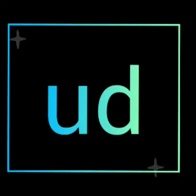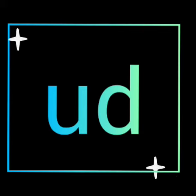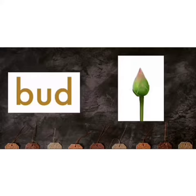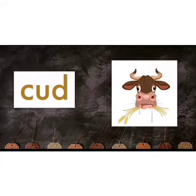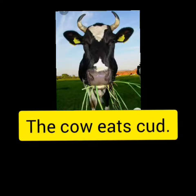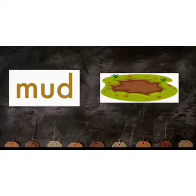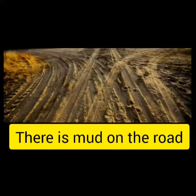Now let's learn some new words from the 'ud' family. Our first word is bud. There is a bud on the rose plant. And our next word, cud. The cow eats cud. And our next word, mud. There is mud on the road.